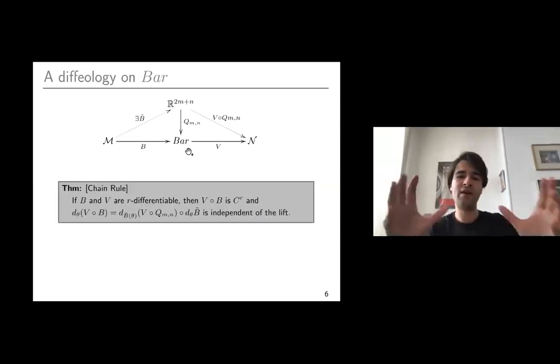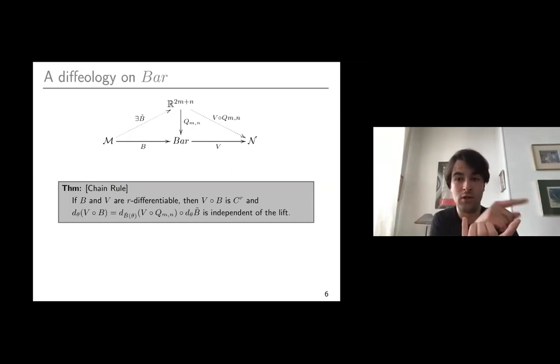If we stare at this diagram, I give you a map B that is differentiable in this new exotic sense and similarly for map V. If you compose them, looking at the composition of the dotted arrows, we get the chain rule, which is just saying that the composite is smooth as a map between manifolds. The two notions combined together and we get back the notion of smooth map between manifolds.